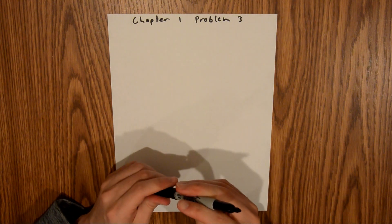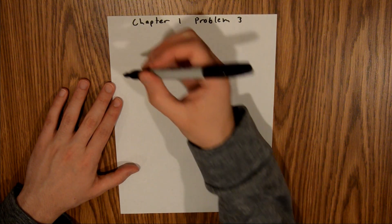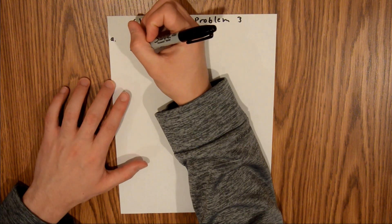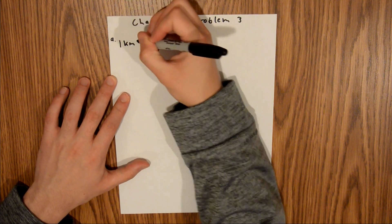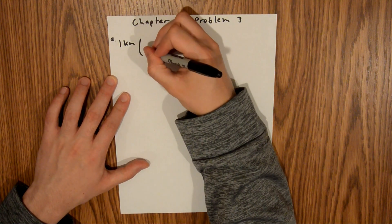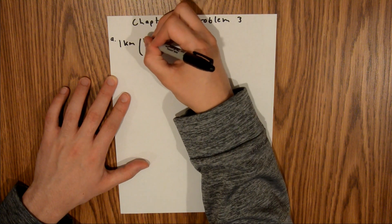And so for Part A, we are asked to find how many microns make up a kilometer. What we can do is start with 1 kilometer, and we know that 1 kilometer is 1,000 meters.